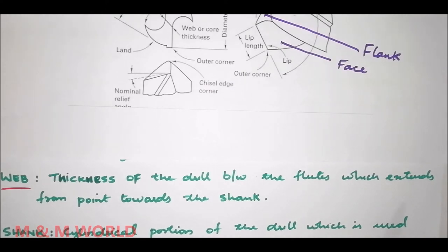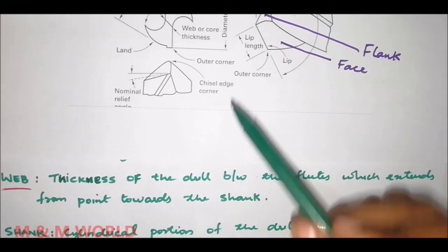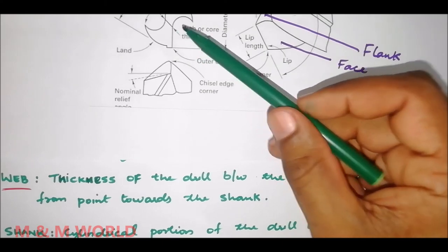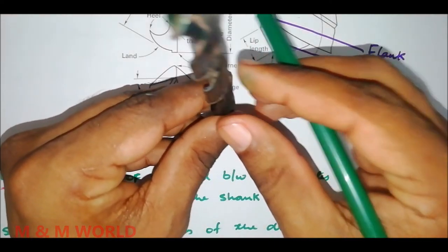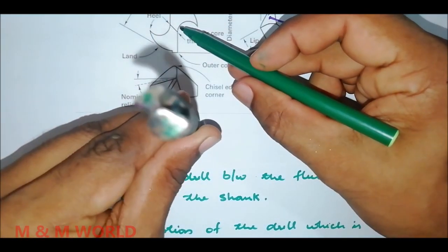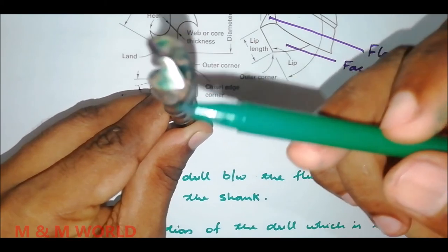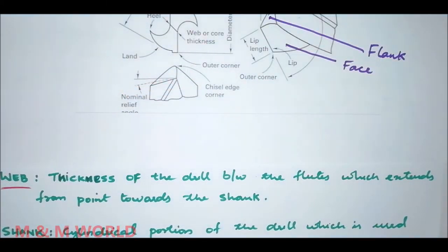Next is the web. The web is the thickness of the drill between the flutes which extends from the point towards the shank. Here you can see the web thickness — this thickness between the flutes is the web thickness.